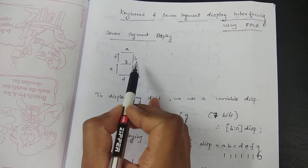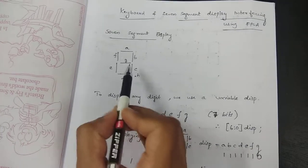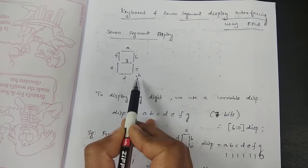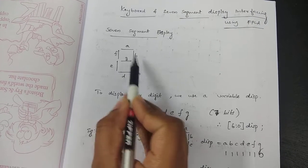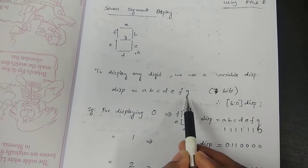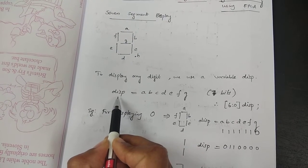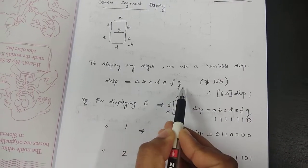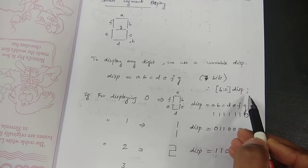First we will see what is a seven segment display. This is the structure of the seven segment display — we have seven segments labeled a, b, c, d, e, f, g, and h. We will be using the first seven segments a to g for giving the inputs. We declare a variable 'dsp' of seven bits: 'dsp [6:0]'.